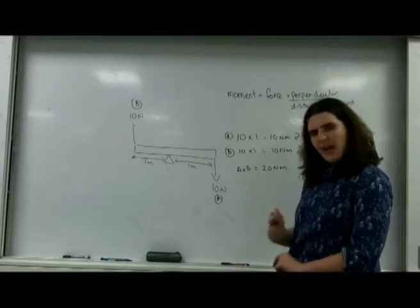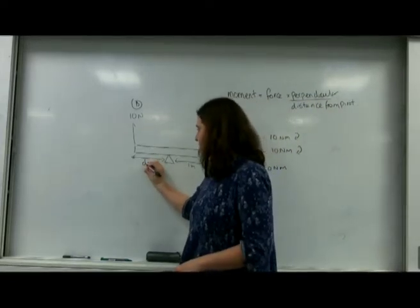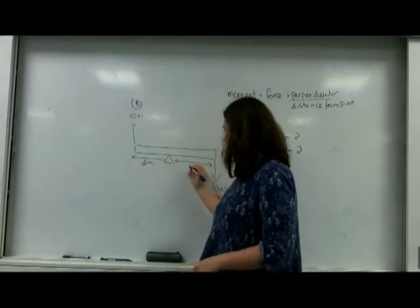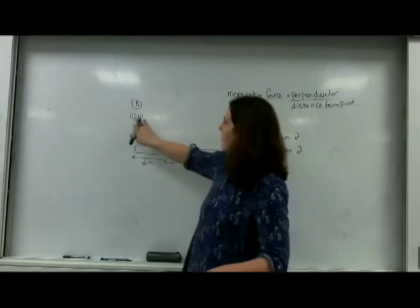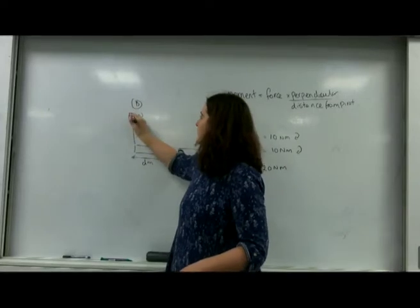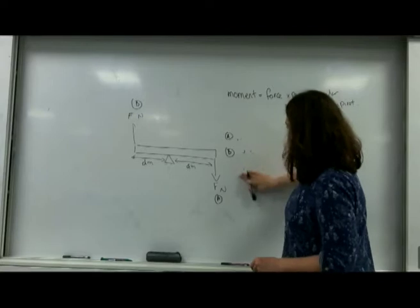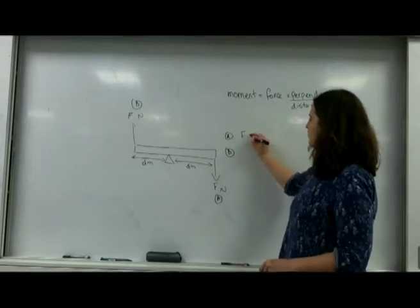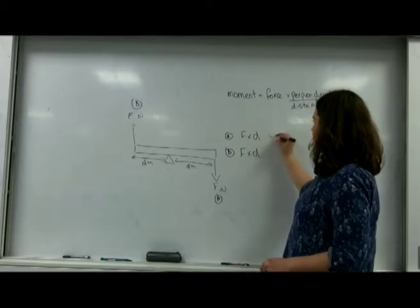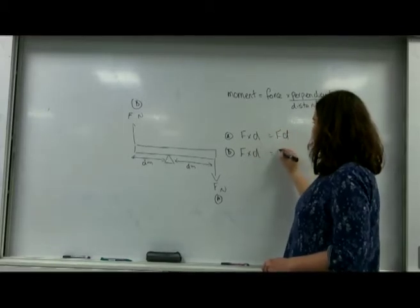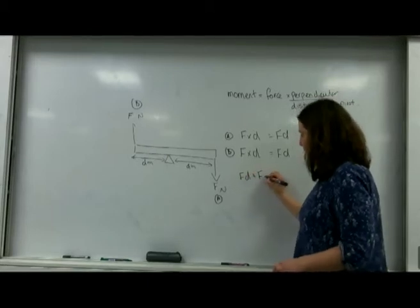If I changed everything to be letters, let's change this to be D, and I change this to be F here. I have force times distance, force times distance, so I have force distance, force distance, and then I end up force distance plus force distance.